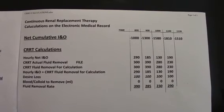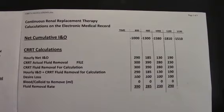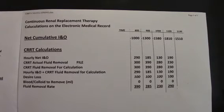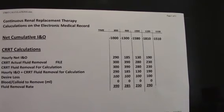The CRRT active fluid removal was 280 ml. File it. Number 3, CRRT fluid removal for calculation is 280 ml. The hourly I&O CRRT fluid removal for calculation is now 130 ml. Desired loss, 100 ml. No blood or colloid. The fluid removal rate is now 230 ml.